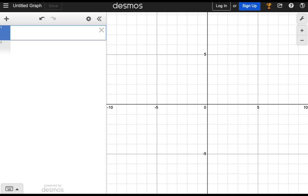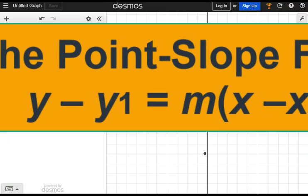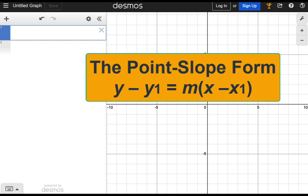If you know the slope of a line and a point the line crosses, then you can use the point slope form to find the equation of the line. In this video we'll be using the Desmos graphing calculator to create a point slope template.